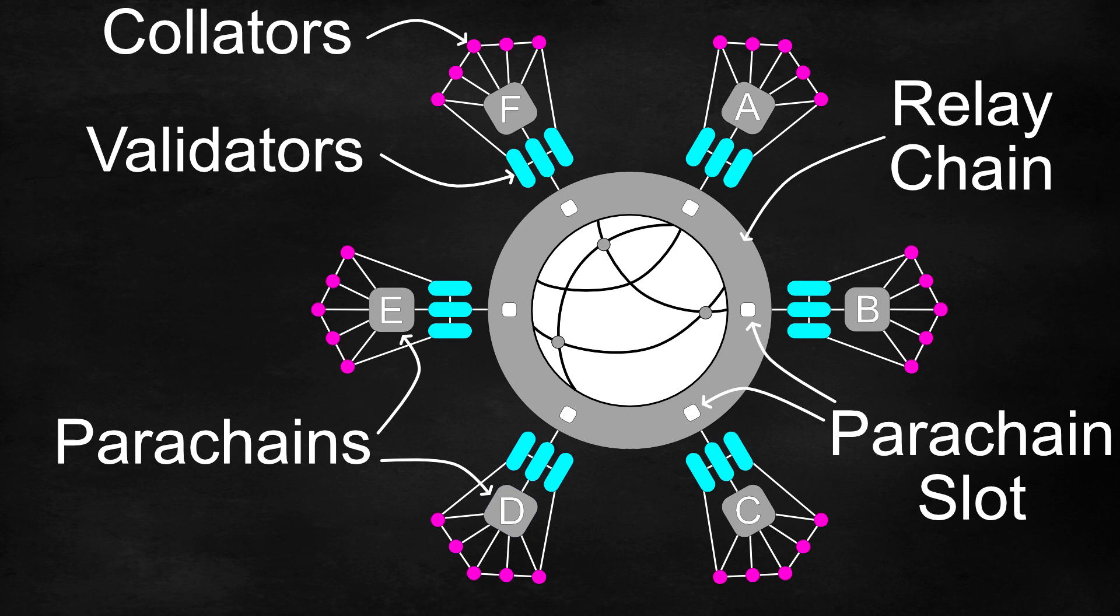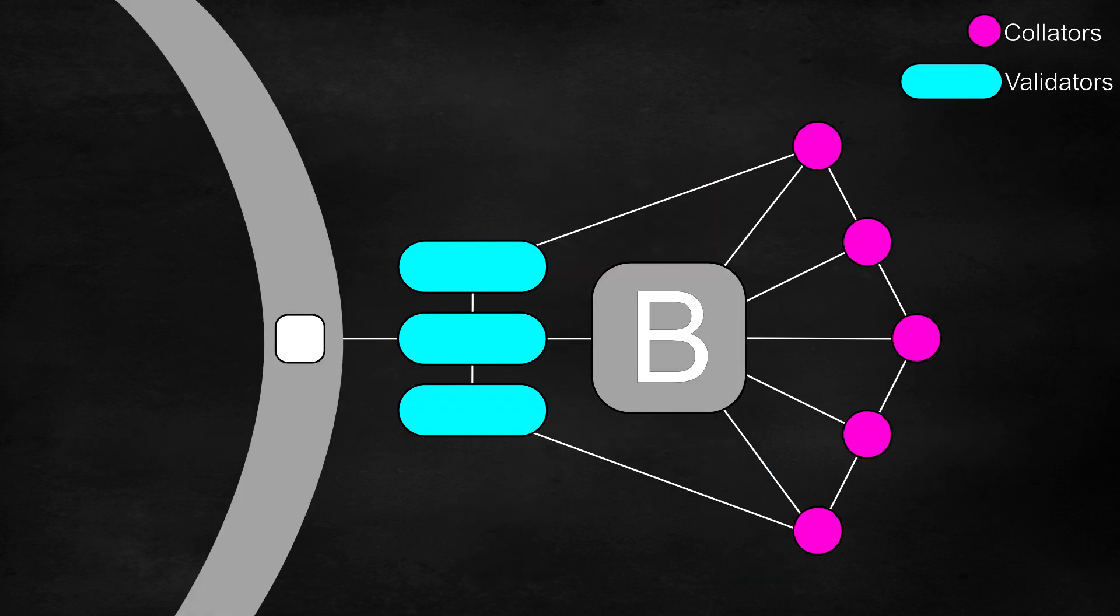So again, here is an overview of the network as a whole. We will now zoom in to one of the individual parachains so we can break it down further.